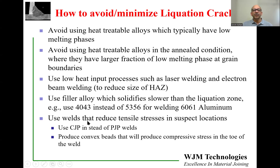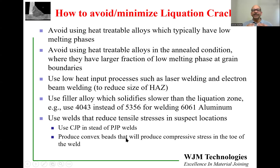Other techniques include using weld designs that reduce tensile stress in suspect locations. Near the toe and root of the weld there will always be high tensile stress, so instead of a PJP (partial joint penetration) weld, recommend a CJP (complete joint penetration) weld. Another option is to produce a convex bead — as it cools, a convex profile on the surface of the weld produces compressive stresses that are pushed towards the toe of the weld, which can help close cracks during cooling.